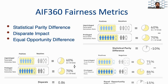Consider a care management setting as shown in the diagrams. In yellow, we have those that received the care management; those not colored in yellow did not receive it. In the underprivileged group, 6 out of 10 received the care management, and in the privileged group, 7 out of 10 received it. The difference here is negative 10%, which indicates unfairness against the underprivileged group. This is the statistical parity difference.